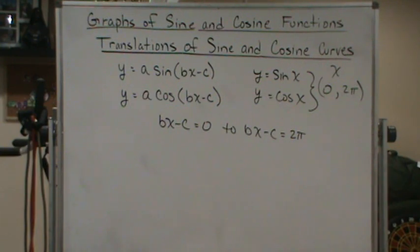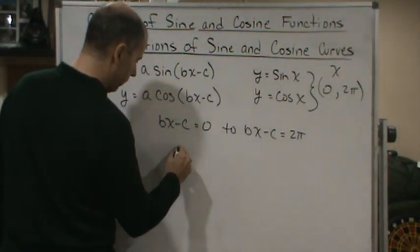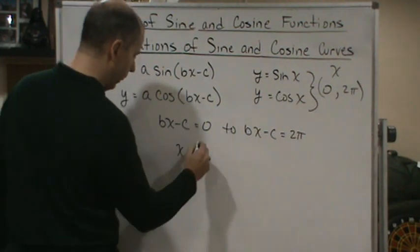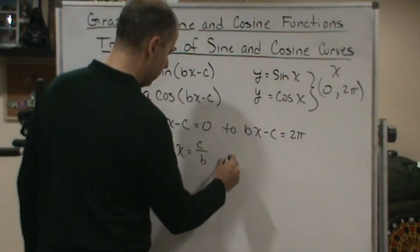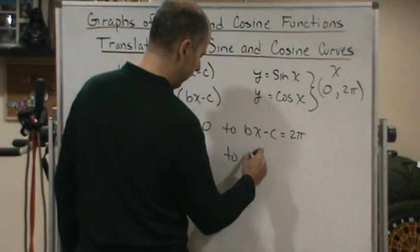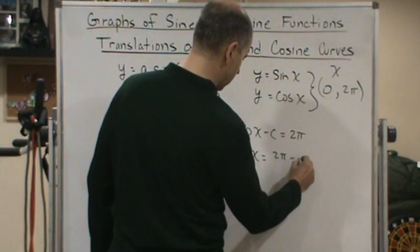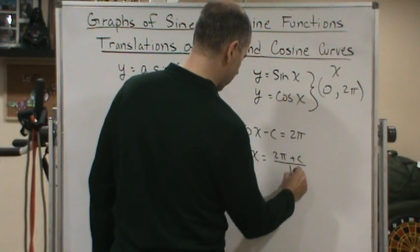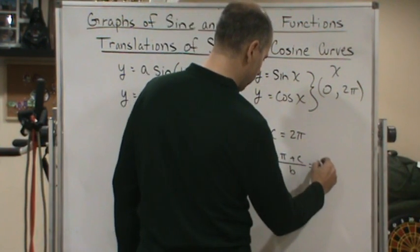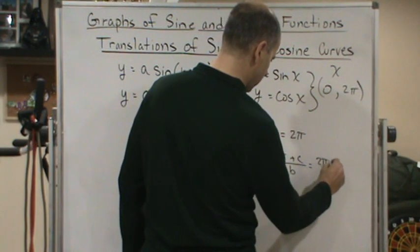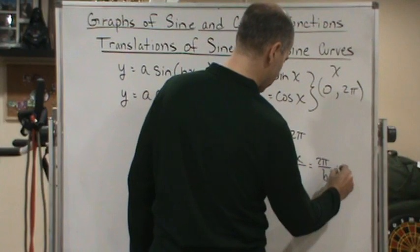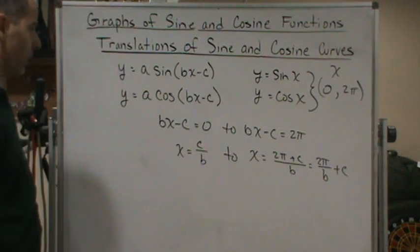If we solve for x for this interval, what do we get? We get x equals c over b to x equals two pi plus c divided by b, or two pi over b plus c over b.